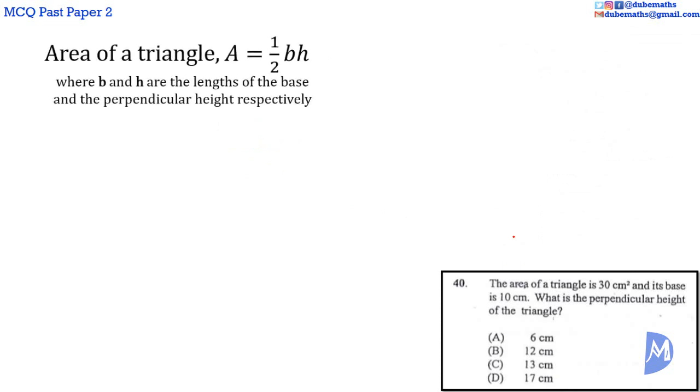Question 40. The area of a triangle is equal to 1/2 base by perpendicular height. We are given that B, the base, is equal to 10 centimeters, and the area of the triangle is equal to 30 centimeters squared. So it follows that 30 cm² is equal to 1/2 by 10 by H. Simplifying, 1/2 by 10 is equal to 5, so we get 30 is equal to 5H. Dividing by 5, 5 into 30 is 6, so we are left with 6 is equal to H, or H is equal to 6. The answer is A.